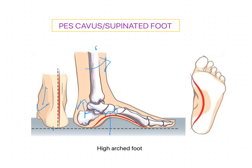In the supinated foot, the plantar aponeurosis becomes slack due to the increased arch height. Over time, it adaptively shortens, decreasing in length. Additionally, the tarsometatarsal joints must undergo pronation and twist to maintain appropriate weight bearing of the forefoot, which may result in chronic plantar flexion of the first ray.